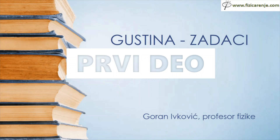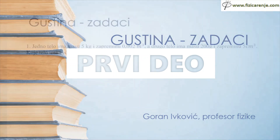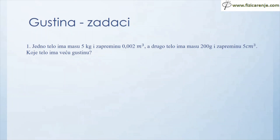GUSTINA ZADACI. Jedno telo ima masu 5 kg i zapreminu 0,002 m³, a drugo telo ima masu 200 grama i zapreminu 5 cm³. Koje telo ima veću gustinu?